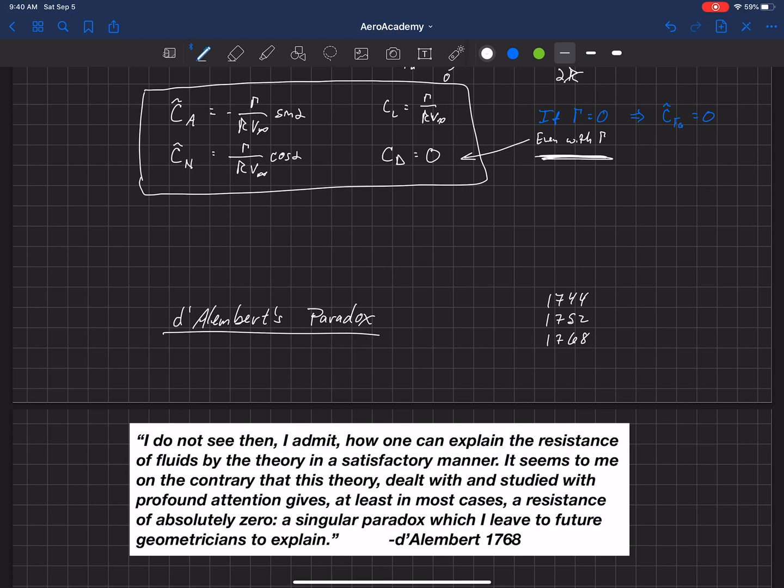He says, I do not see then, I admit, how one can explain the resistance of fluids by the theory in a satisfactory manner, meaning the drag. It seems to me, on the contrary, that this theory dealt with and studied with profound attention gives, at least in most cases, a resistance of absolutely zero, a singular paradox, which I leave to future geometricians to explain. And by geometricians, that's synonymous with mathematicians.